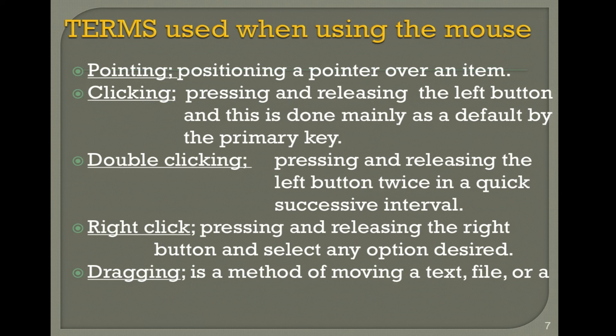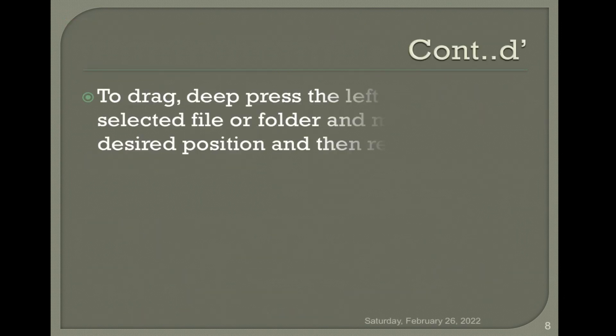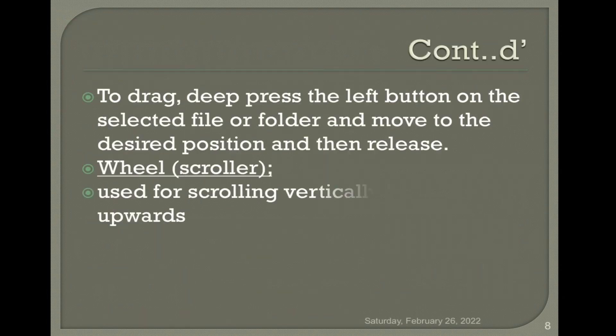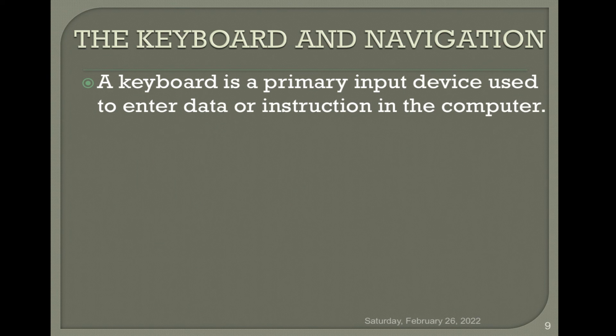Dragging is moving text, a file, an object, or a folder — anything on screen. You press the mouse button on it, keep it held without releasing, and then move it. That's what we call dragging. Then there is the scroll wheel, which scrolls upwards and downwards. That's all about the mouse.